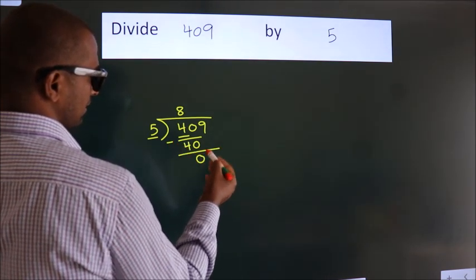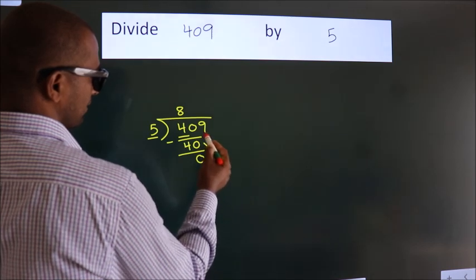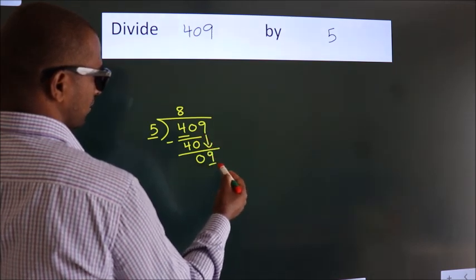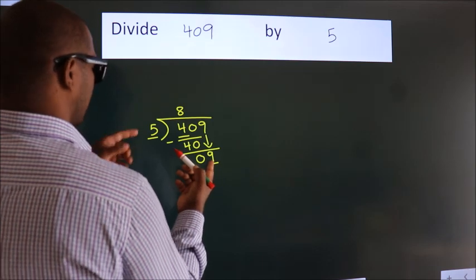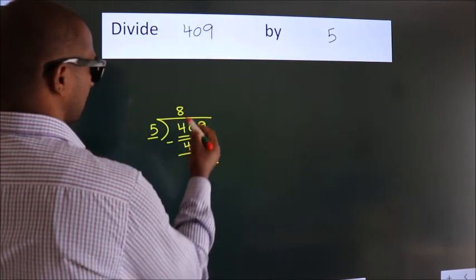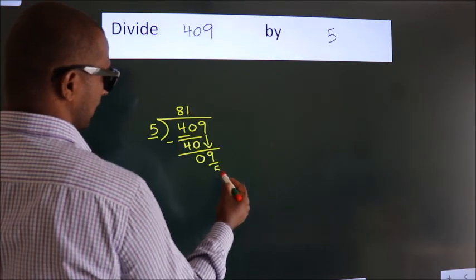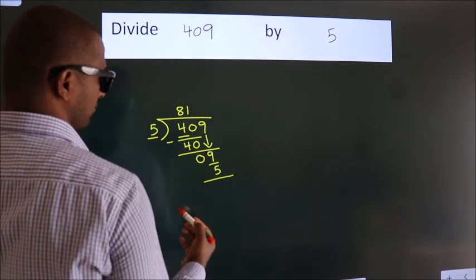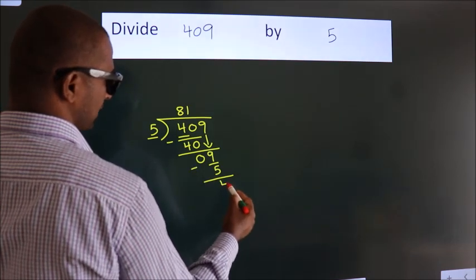After this, bring down the beside number, so 9. A number close to 9 in the 5 table is 5 ones, 5. Now we subtract. We get 4.